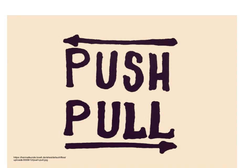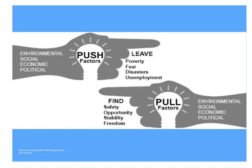This is the first theory — push and pull — viewed in terms of planning. The push and pull theory considers environmental, social, economical and political factors. Other factors considered were poverty, fear, disaster and unemployment, while the pull factors include safety, opportunity, stability and freedom.